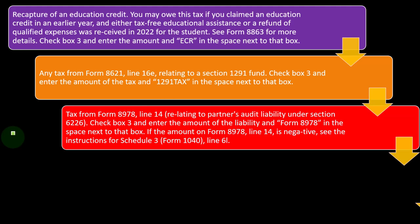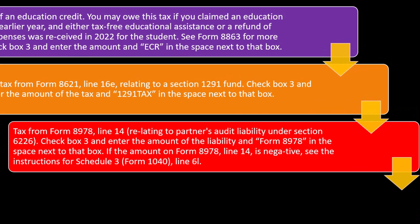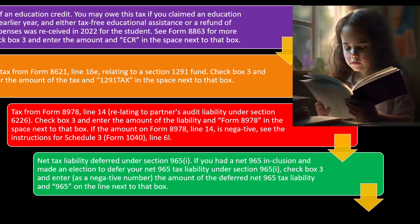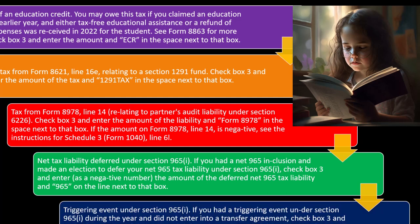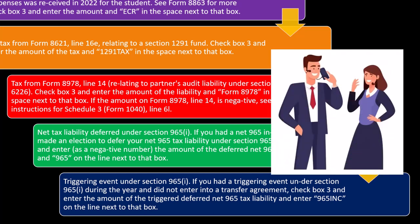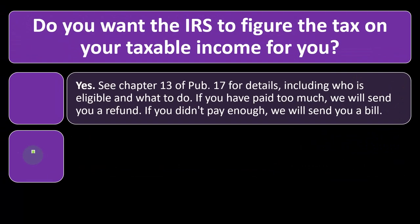Tax from Form 8978, Line 14, relating to partners' audit liability under Section 6226 — check box 3 and enter the amount of the liability and 'Form 8978' in the space next to the box. Net tax liability deferred under Section 965(i): if you had a net 965 inclusion and made an election to defer your net 965 tax liability under Section 965(i), check box 3 and enter as a negative number. Triggering event under Section 965(i): if you had a triggering event during the year and did not enter your transfer agreement, check box 3 and enter the amount of the triggered deferred net 965 tax liability and enter '965 inc' on the line next to that box.